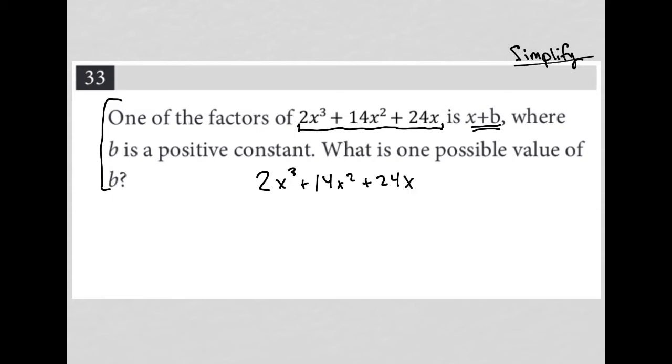The GCF, or the greatest common factor, is 2x. Each of these terms are even, so 2 goes into all of them, and each of them have an x, so x goes into all of them. So if I factor out the GCF, I'd have 2x parentheses,